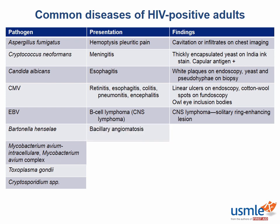Bartonella henselae is a zoonosis, an infectious disease transmitted from animals to humans. In this case, it is transmitted from cats to humans and can cause bacillary angiomatosis. On biopsy, we would see neutrophilic inflammation.